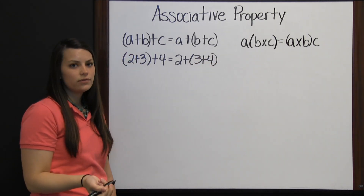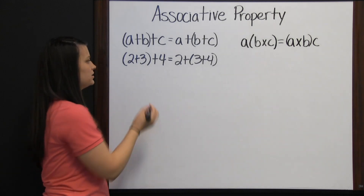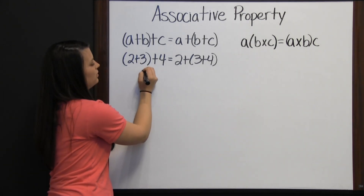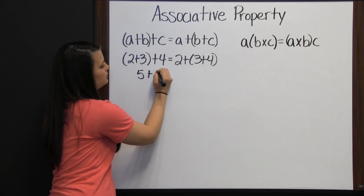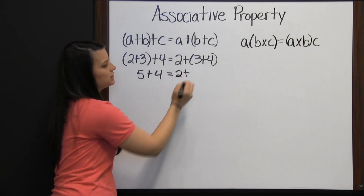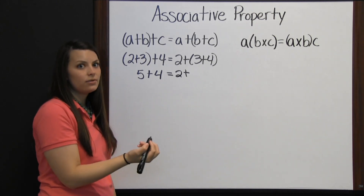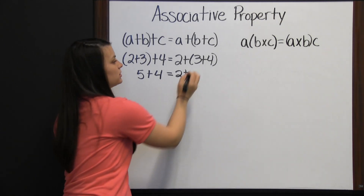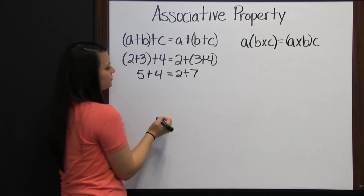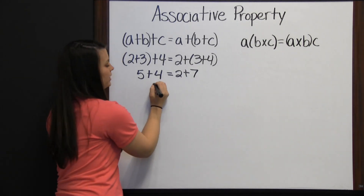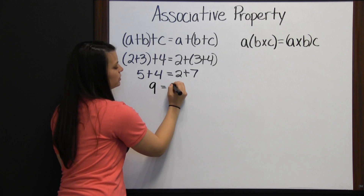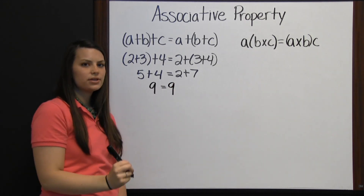We're going to follow our order of operations, or PEMDAS. We're going to start by adding 2 plus 3. 5 plus 4 equals 2 plus, following order of operations, 3 plus 4, which is 7. 5 plus 4 is 9, and that does equal 2 plus 7, which is also 9.